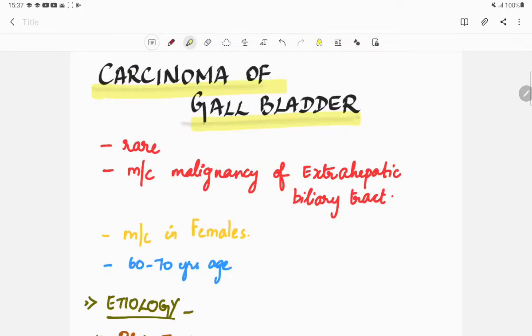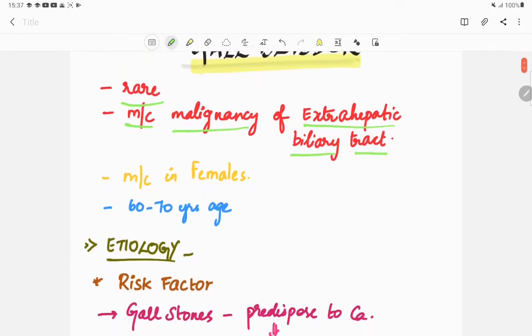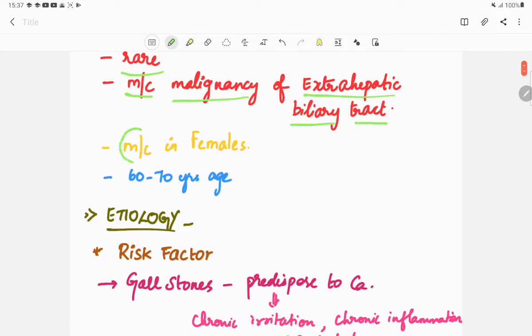Carcinoma of gallbladder is very rare, but it is the most common malignancy of the extrahepatic biliary tract. The carcinoma of gallbladder is more common in females than in males and occurs in people of age 60 to 70 years.